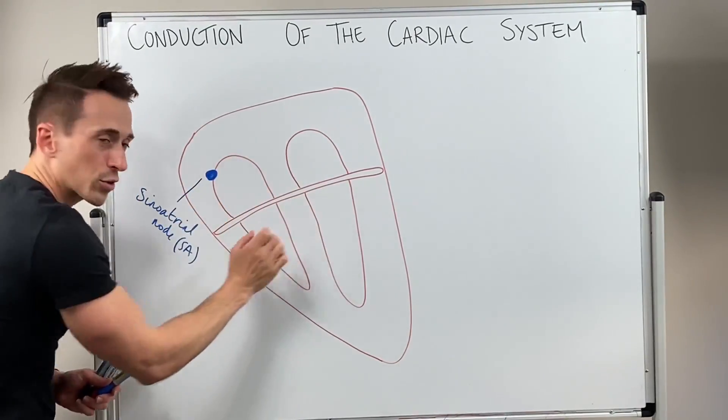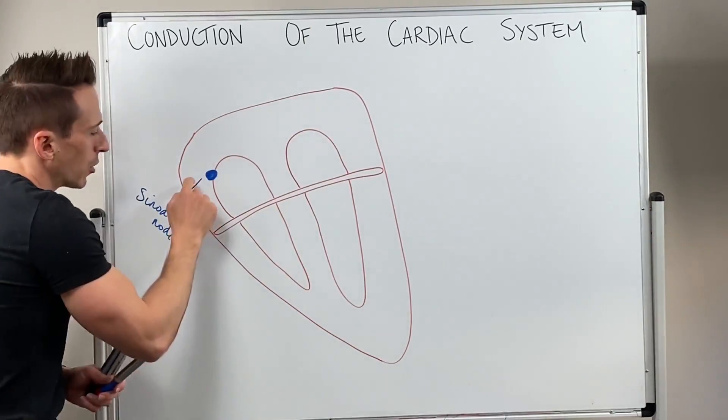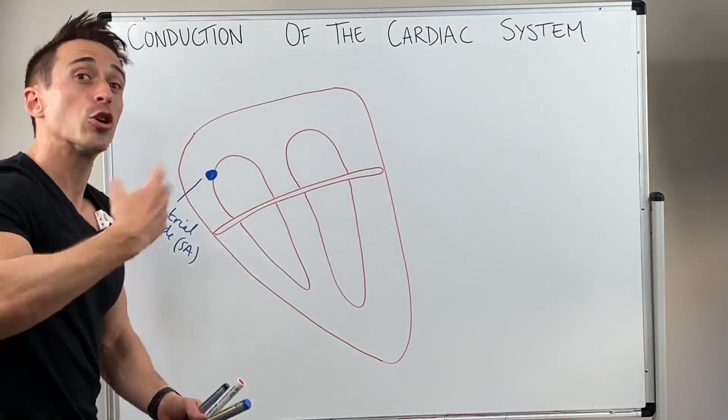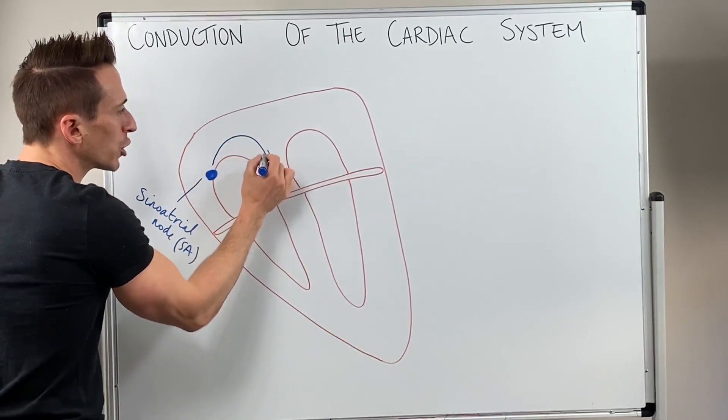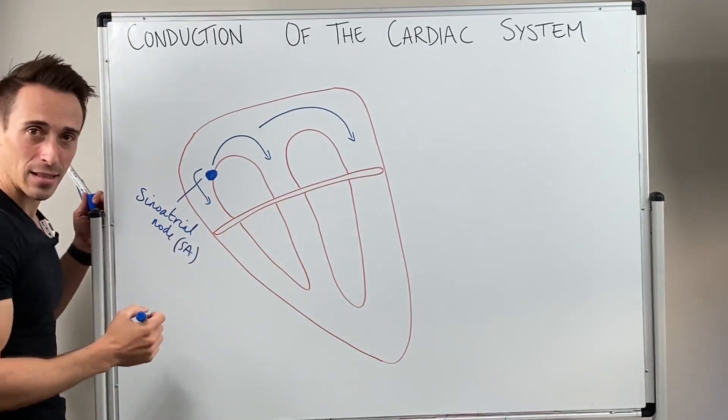Remember, two atria at the top, two ventricles down the bottom. So the sino-atrial node muscle tissue is negative, then turns positive and sends a wave of positive charge through the atrial muscle.